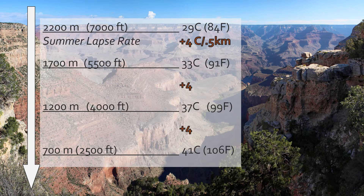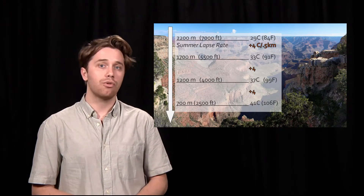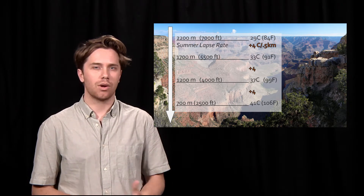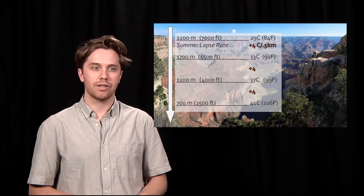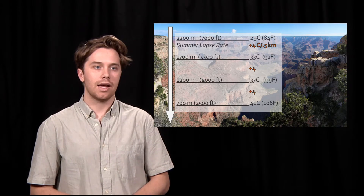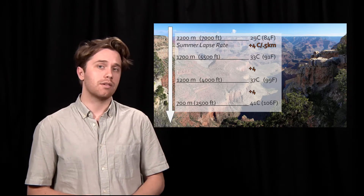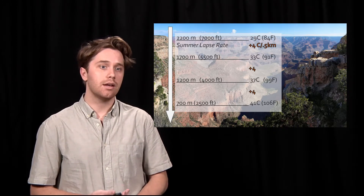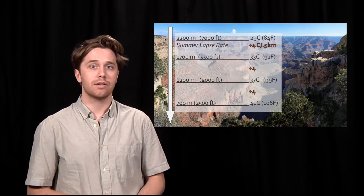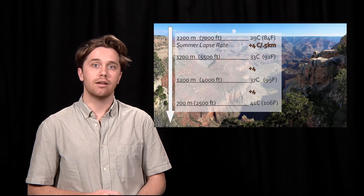In the summertime, the lapse rate can approach 8 degrees Celsius per kilometer as you hike down into the canyon. So if you were to start at the south rim, for example, at 29 degrees Celsius or roughly 84 degrees Fahrenheit, and you hike down to the bottom of the canyon at 700 meters or about 2,500 feet, you'd have a temperature well over 40 degrees or over 100 degrees Fahrenheit.